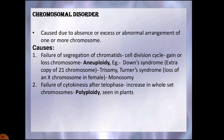Down syndrome is due to the gain of an extra copy of chromosome number 21, the autosome. Turner syndrome is due to the loss of an X chromosome in the human female, giving the X0 condition; a normal female is XX, but this female has X0. Klinefelter syndrome is due to an additional copy of the X chromosome, resulting in an XXY condition.